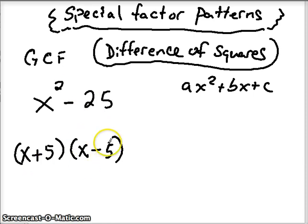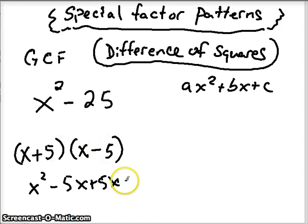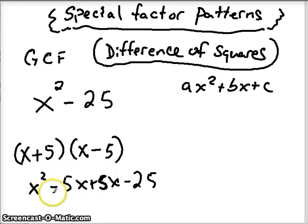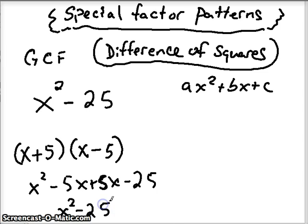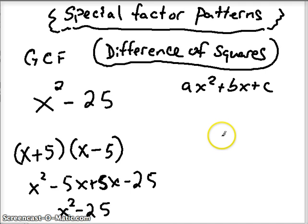You could FOIL to check: we get x squared minus 5x plus 5x and minus 25. The reason the positive and negative — the opposites — have to be there is so that these middle terms always cancel. In a difference of squares quadratic, the middle terms will always cancel, and what you're left with is x squared minus 25, which is what we started with. So if you can recognize the difference of squares — two squares being subtracted — that is a difference of squares. Try to recognize it; it will save you time.